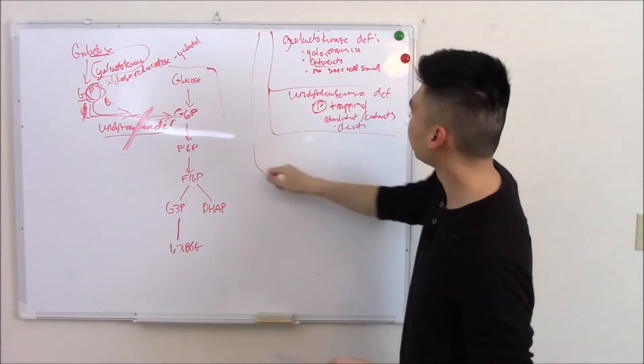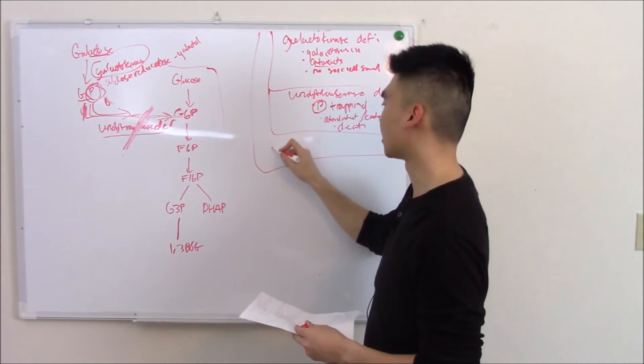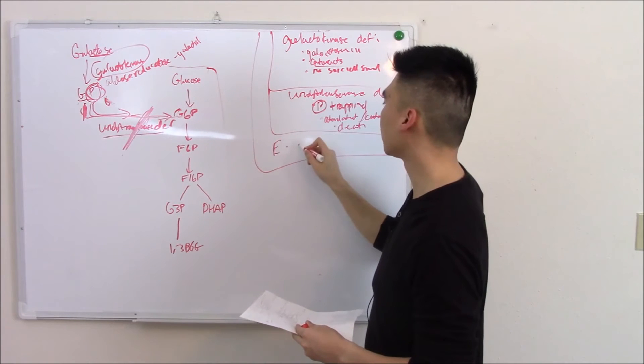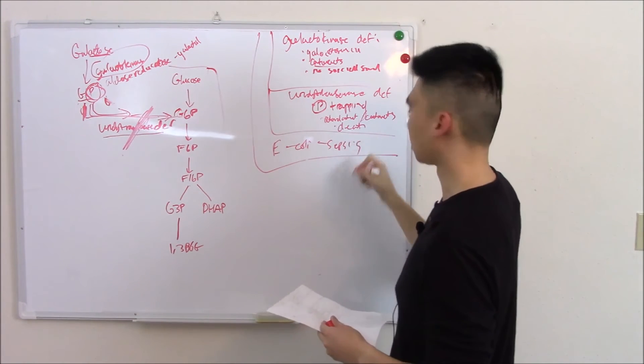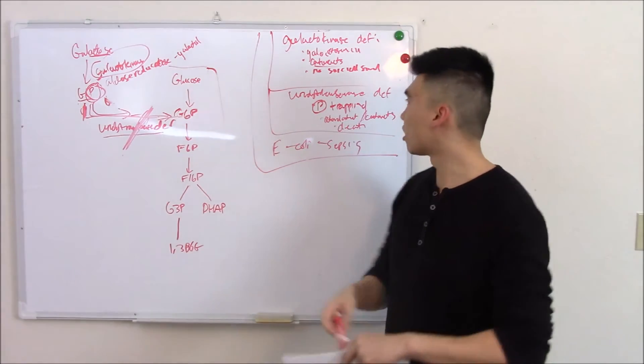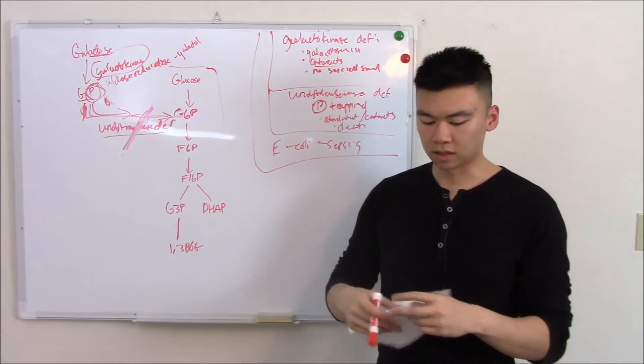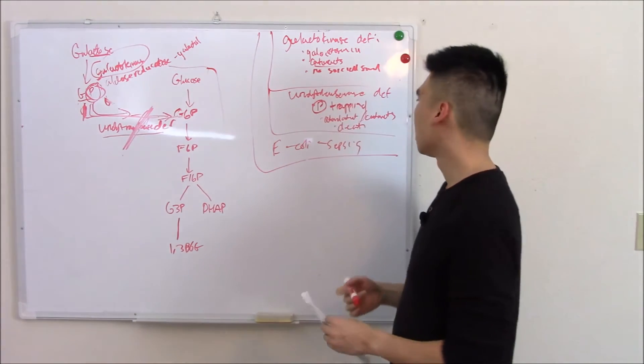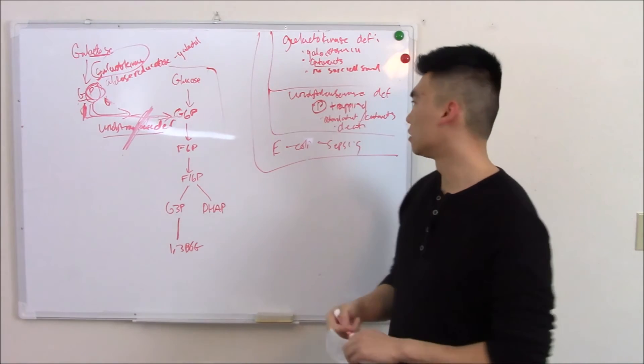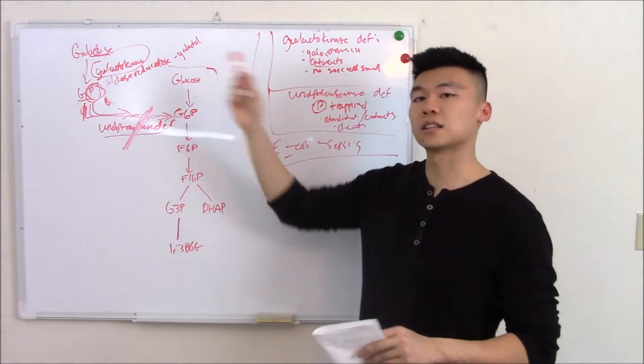One last thing, something that's common in both of them. While you can't use galactose, bacteria sure can. So E. coli sepsis is common. Let's put it all together. Let's say a baby starts feeding. Mom knows that there's failure to thrive, lack of social smile. What is the baby at risk for? E. coli sepsis. That'd be a nice board question. So that's galactose. Let's move on to fructose.